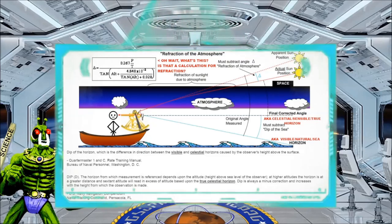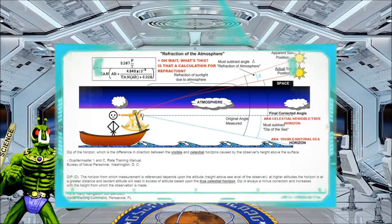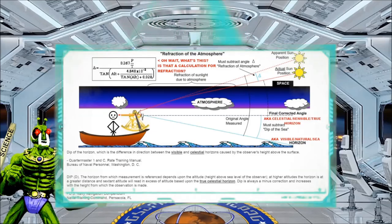Dip of the horizon, which is the difference between visible and celestial horizon, caused by the observer's height above the surface. Quartermaster 1 and C, rate training manual, Bureau of Naval Personnel, Washington, D.C.